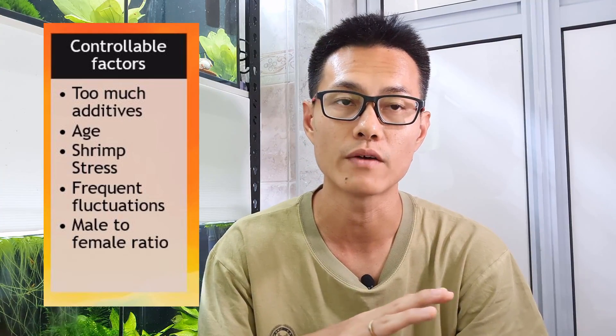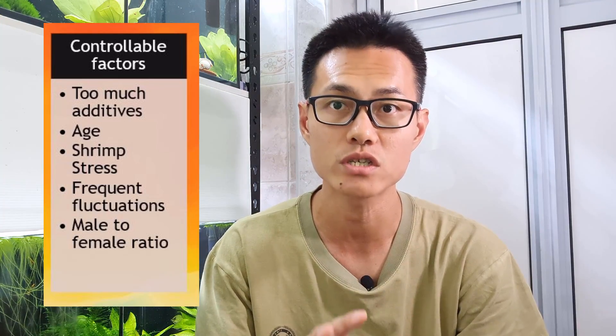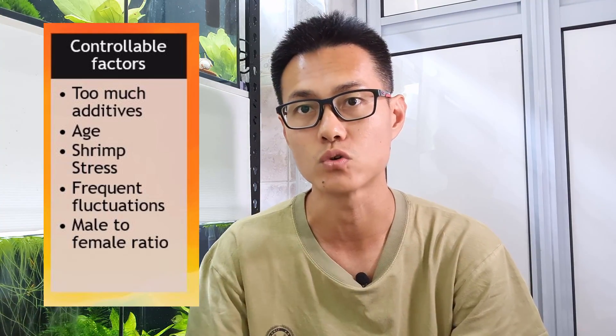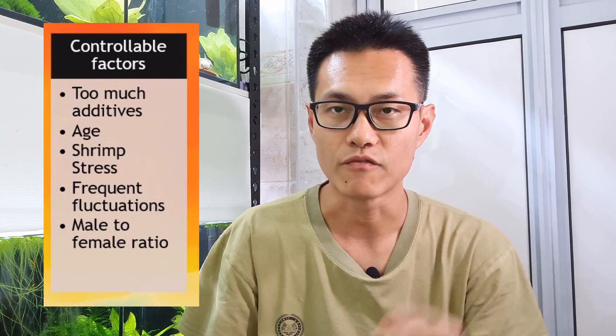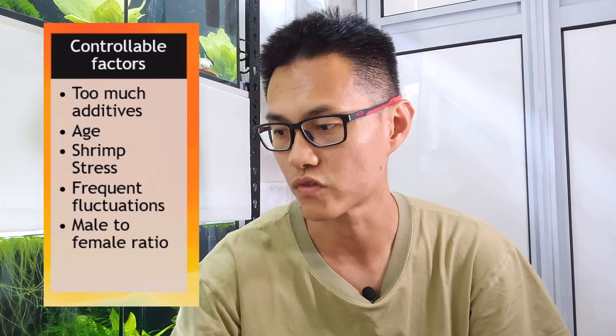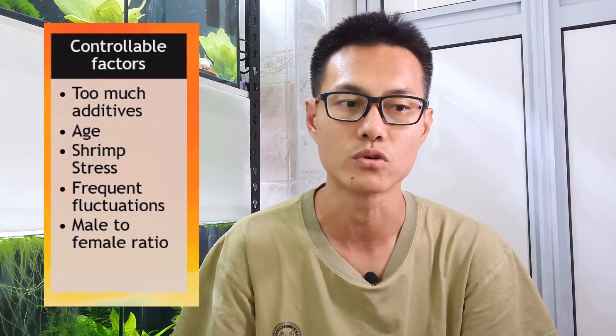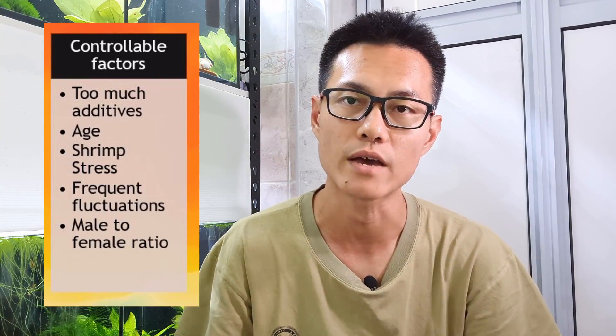Frequent water fluctuations are also controllable. Think about your water change schedule — if your bio load is low, you can skip that tank and move on to the next one. The last controllable factor is male-to-female ratio, which is why we advocate selective breeding: learn to differentiate males from females and scoop the males out so you can maintain a proper ratio in the tank.